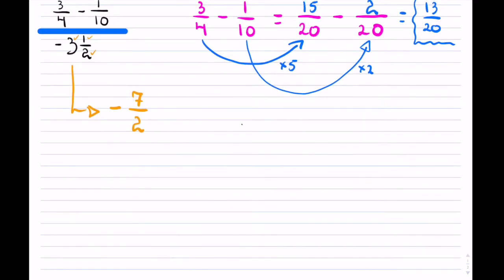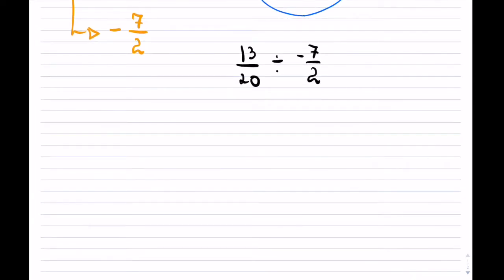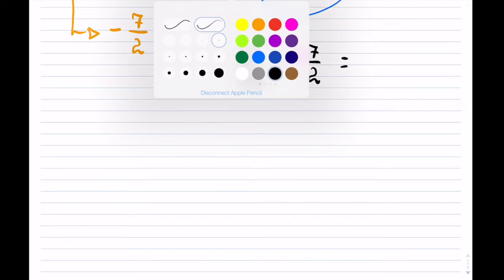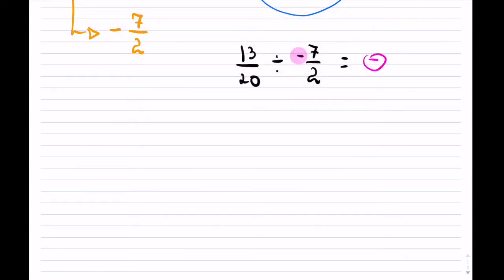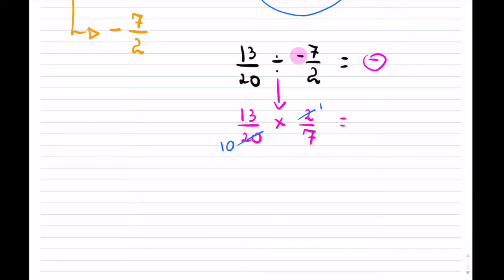Overall, what I have is 13 over 20 divided by negative 7 over 2. The first thing I check is whether my answer will be positive or negative. Because of this negative, I know my answer will be negative. In terms of division, 13 over 20 — division always changes to multiplication, and we take the reciprocal. Can I reduce anything? 2 goes into 20 ten times, and 2 into 2 goes once. So that has reduced that.